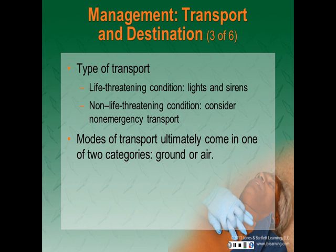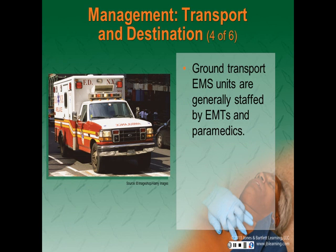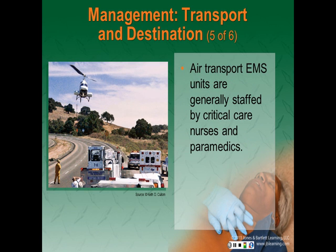Types of transport: if a life-threatening condition exists, transportation should include lights and sirens. If the patient is not critical, careful consideration should be given to non-emergency transport. Modes of transport ultimately come in one of two categories — ground or air. Ground transport EMS units are generally staffed by EMTs and paramedics. Air transport EMS units are generally staffed by critical care nurses and paramedics.